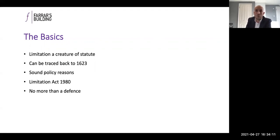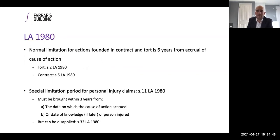There are obviously good policy reasons for limitation being in existence — to protect defendants from having to deal with stale claims when documents or evidence may have disappeared some years after the accident that led to the cause of action. We're talking about the Limitation Act 1980. The first thing to realise is that limitation is no more than a defence, so even if a claim is outside limitation, they can still bring a claim unless the defence is raised by a defendant. The normal limitation period for contracts and tort is six years, but for personal injury claims there's a special period of three years.